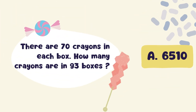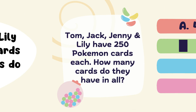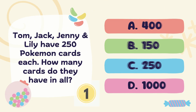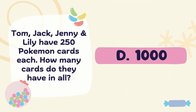6500. Next Question: Tom, Jack, Jenny and Lily have 250 Pokemon cards each. How many cards do they have in all? Answer: Option D. 1000.